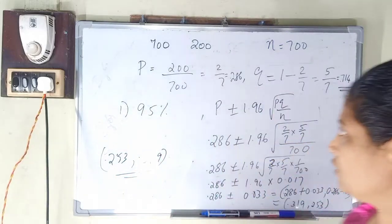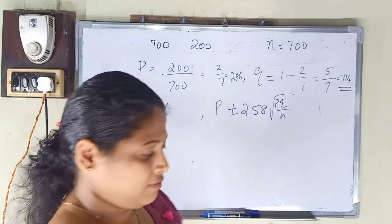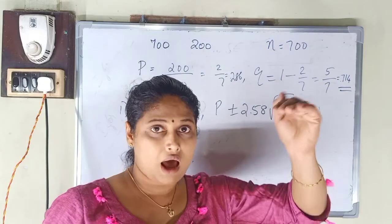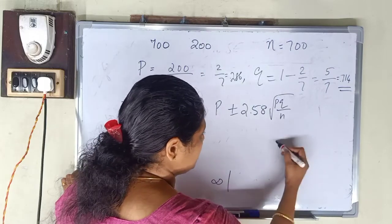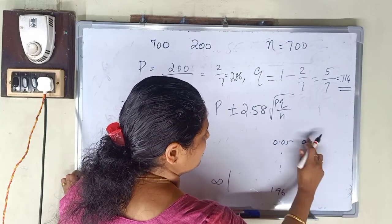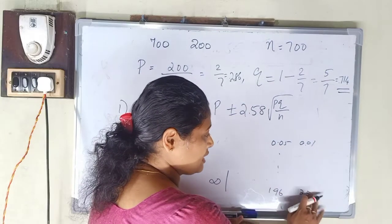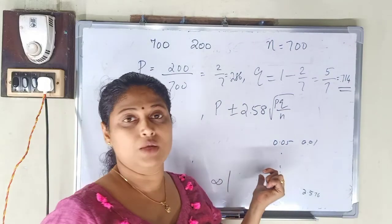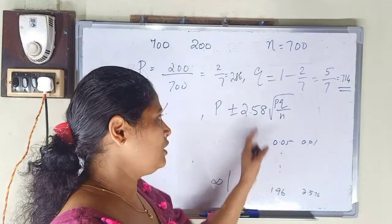Now we will see the 99% confidence interval. The z-value for 99% is 2.58, also written as 2.576. This is read from the last line of the z-table, where for alpha 0.05 we have 1.96 and for alpha 0.01 we have 2.576.